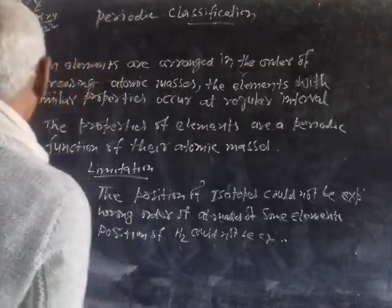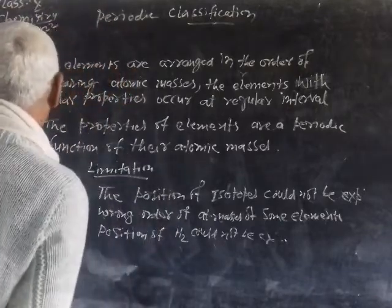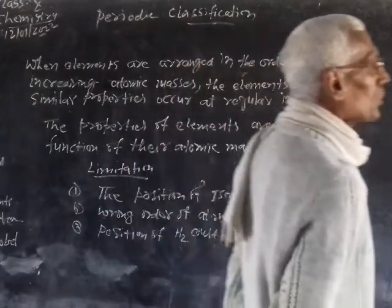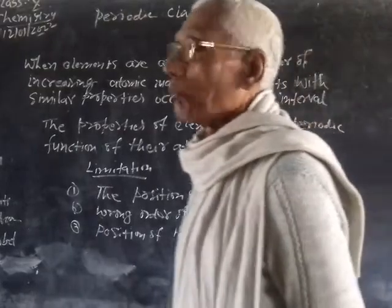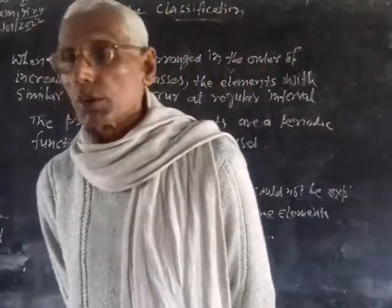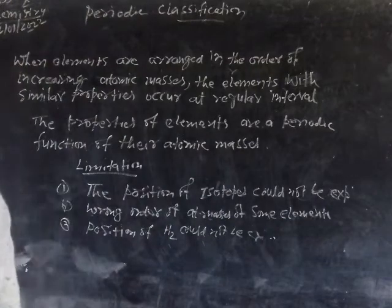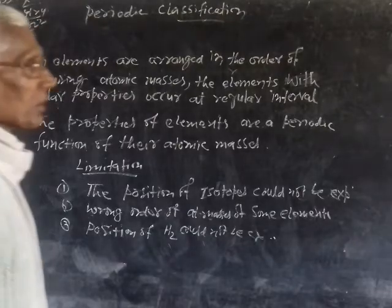Mendeleev's Periodic Law predicted the existence of several elements that had not been discovered at that time. Mendeleev's Periodic Table could predict the properties of several elements on the basis of their position.